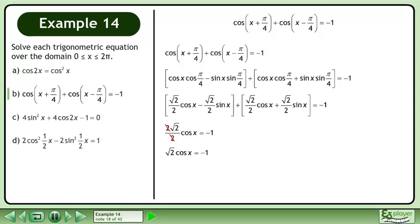Cancel the 2's. Divide both sides by root 2. Rationalize the denominator. This gives us cosx equals negative root 2 over 2. The solution is x equals 3π over 4 and 5π over 4.